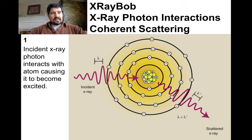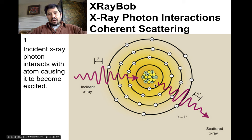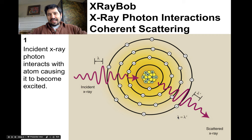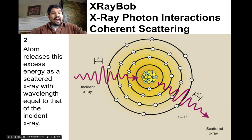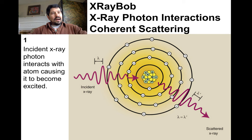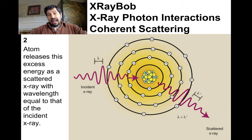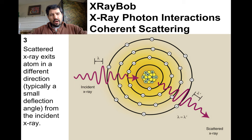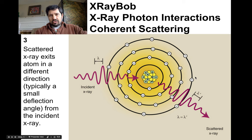The incident x-ray photon interacts with the atom, and the atom becomes excited. The wavelength out and wavelength in are equal, so it's going to leave with the same energy. The atom was excited, so it releases that excess energy as a scattered x-ray of wavelength equal in energy to the incident. The atom relaxes and releases that x-ray photon of equal energy, but it's slightly deflected.